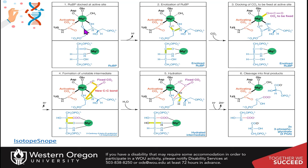Once it's docked with the magnesium, it's going to form an enol intermediate. You can see the double bond shifts between the two carbons from the carbonyl position, and this allows an anion to form on the oxygen. The carbon dioxide that's going to be fixed from the atmosphere can then come into the binding pocket, also stabilized by this magnesium.